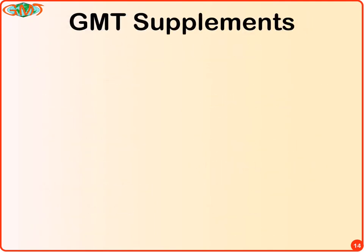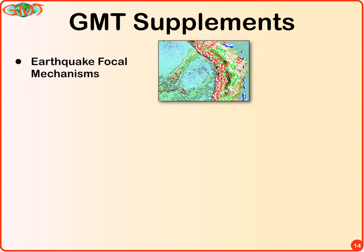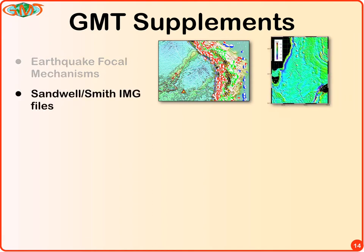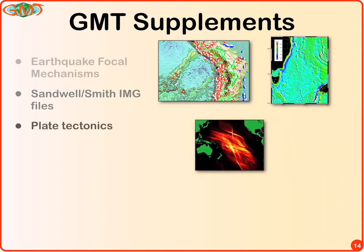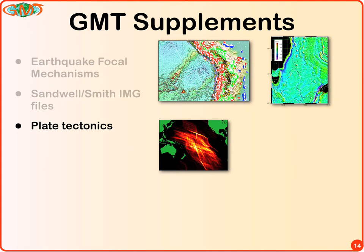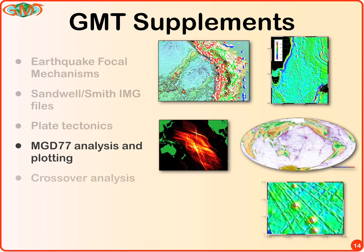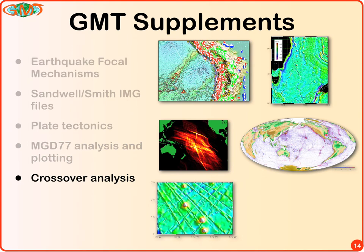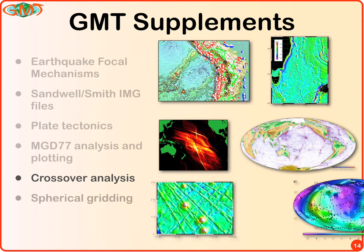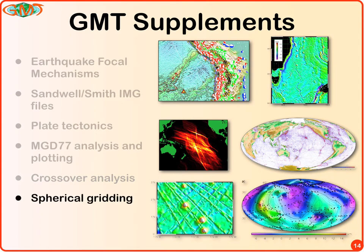I mentioned supplements earlier — these cover tasks we don't consider generic. Generic means it should apply to anybody in science, with nothing specific to gravity, earthquakes, or oceanography. Things a bit beyond the general stuff, getting into disciplines, go into supplements. There's one for plotting focal mechanisms and GPS velocity fields and errors; one for specific Mercator grids from satellite altimetry for gravity or bathymetry; plate tectonic applications and backtracking reconstructions; analyzing and plotting marine geophysical data records from NGDC; crossover analysis for ship tracks to minimize intersection mismatches; and spherical gridding on a sphere.